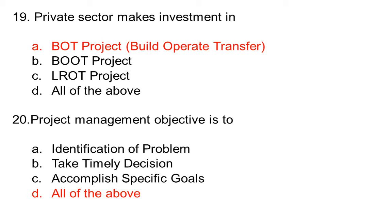Project management objective is to: option A identification of problem, option B make timely decision, option C accomplish specific goals, option D all of the above. The correct answer is option D, all of the above.